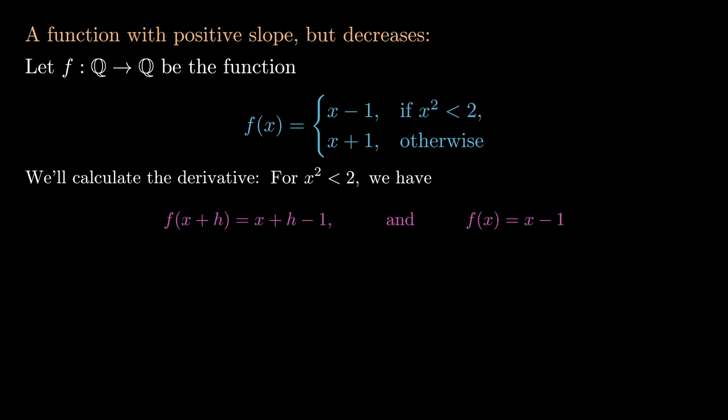So in this case we have f of x plus h is x plus h minus 1, and f of x is equal to x minus 1. Now the derivative, as we all know from kindergarten, is the limit as h tends to 0 of f of x plus h minus f of x over h. Using what we have in the above line, this reduces to x plus h minus 1 minus x minus 1 all divided by h.